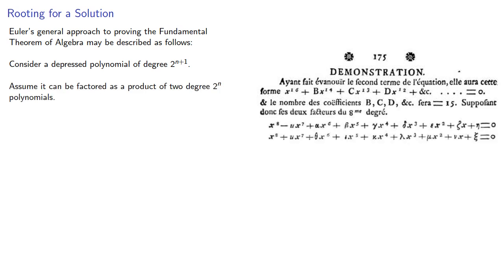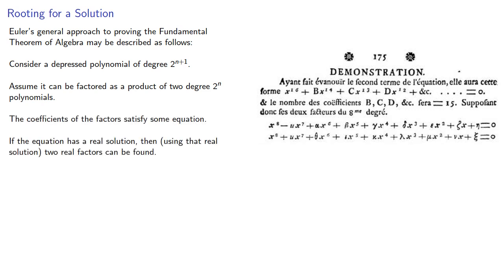The coefficients of the factor satisfy some equation. If the equation has a real solution, then using that real solution, two real factors can be found. In practice, the equations are nonlinear, so actually solving them is difficult, and in fact it turns out to be impossible beyond a certain point.